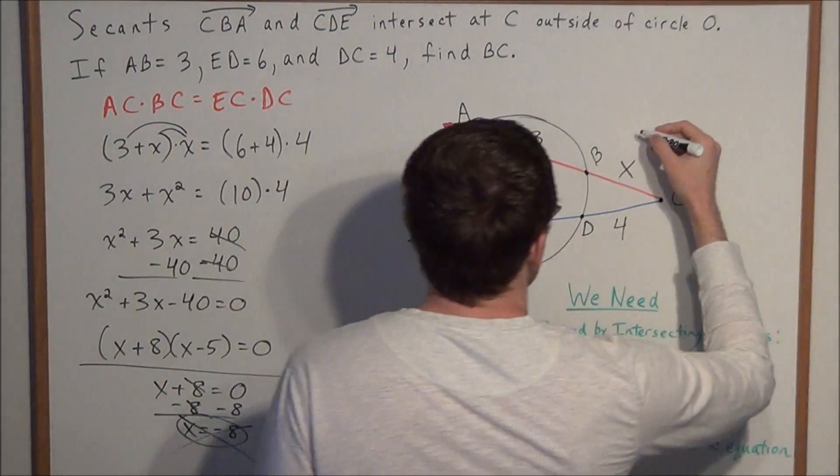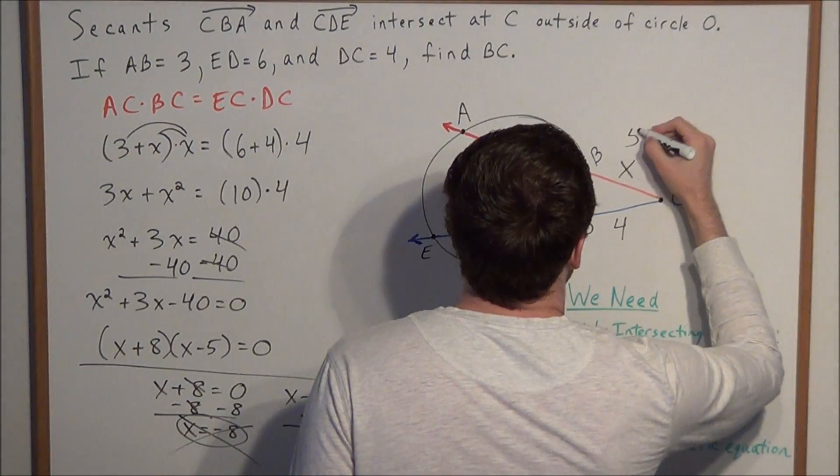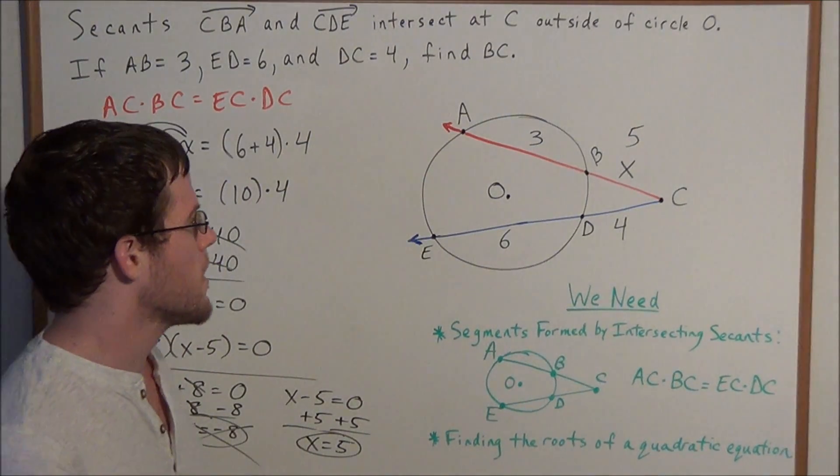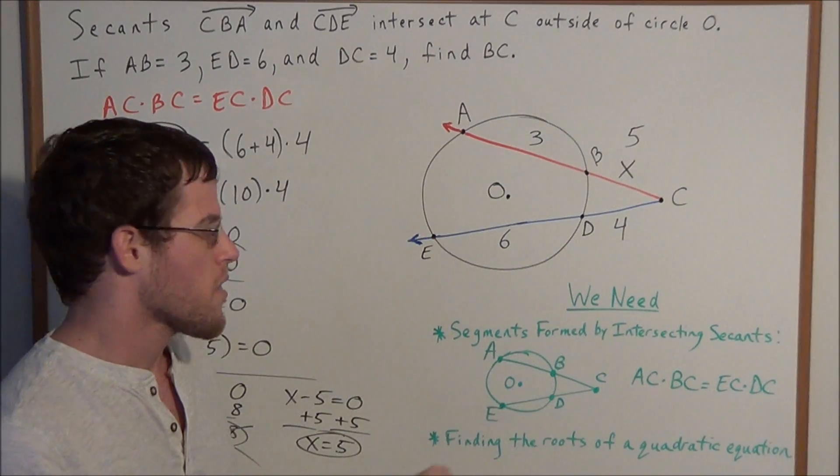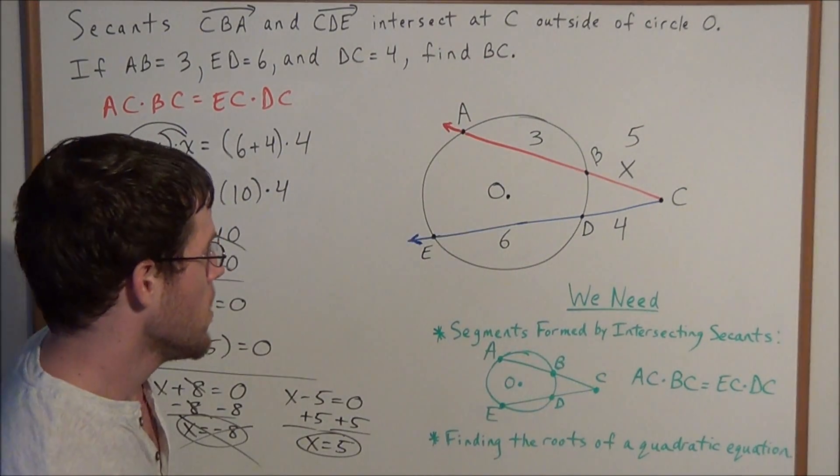So the length of BC is 5. Now if you do have time on your test, I would recommend that you substitute these values back into the theorem and see if they check out.